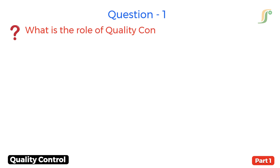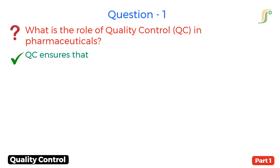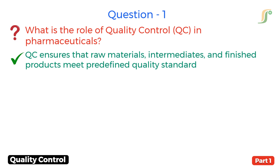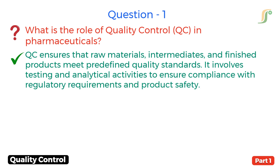Question 1. What is the role of quality control in pharmaceuticals? Answer. QC ensures that raw materials, intermediates and finished products meet predefined quality standards. It involves testing and analytical activities to ensure compliance with regulatory requirements and product safety.